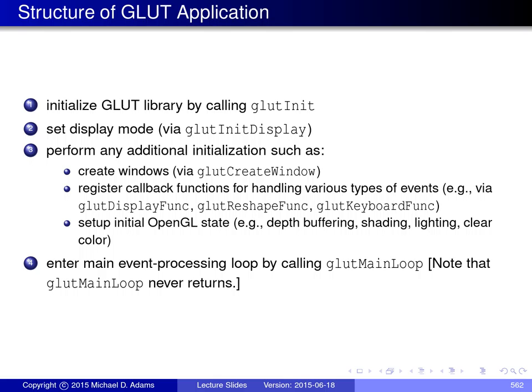A GLUT application program has a general structure where the very first thing it does is initialize the GLUT library by calling glut_init, which always has to be the very first GLUT function invoked. Using any other functionality before initialization will result in undefined behavior. The next thing is to set the display mode, selecting for example whether drawing will be done in grayscale or color, with or without alpha/transparency information, double buffering, depth buffering, and so on. Then the application performs any additional initialization, including creation of at least one graphics window, and registers callback functions for handling various event types such as keyboard or mouse events.